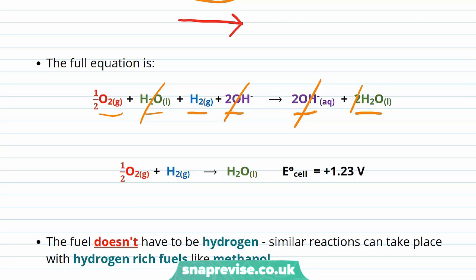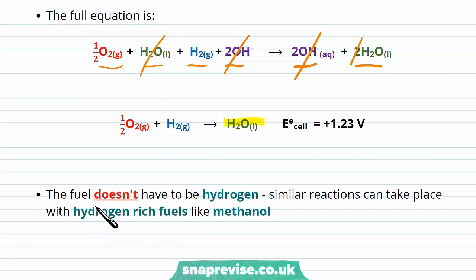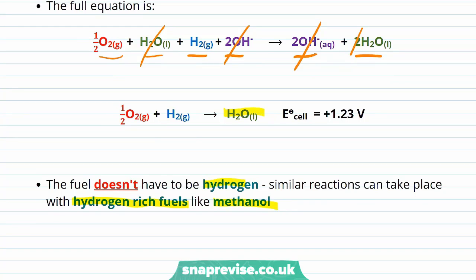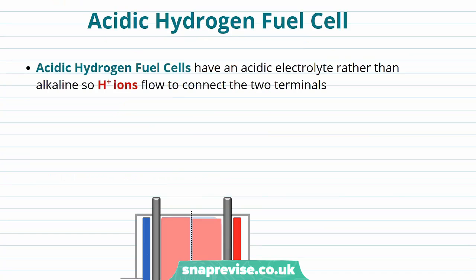This is why fuel cells are seen as a green source of energy. Their only waste product that they directly generate is water, which is not harmful to the environment. The fuel doesn't have to be hydrogen, either. Similar reactions to the one above can take place, as long as it is a hydrogen-rich fuel, for example, methanol, which can also reduce the oxygen and form water.